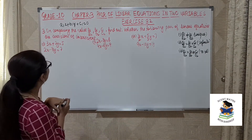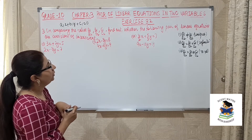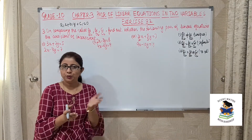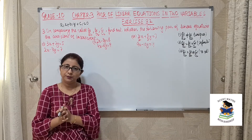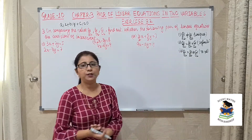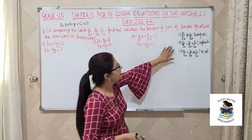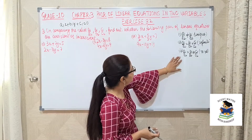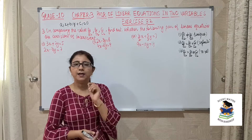Question 3 is on comparing the ratios A1/A2, B1/B2, and C1/C2 to find out whether the following pair of linear equations are consistent or inconsistent. This question is similar to question 2. First we find the ratios A1/A2, B1/B2, and C1/C2, then compare them. If A1/A2 is not equal to B1/B2, the pair of equations will have a unique solution. If all three ratios are equal, it will have infinitely many solutions. But if the first two ratios are equal and not equal to C1/C2, then there is no solution.